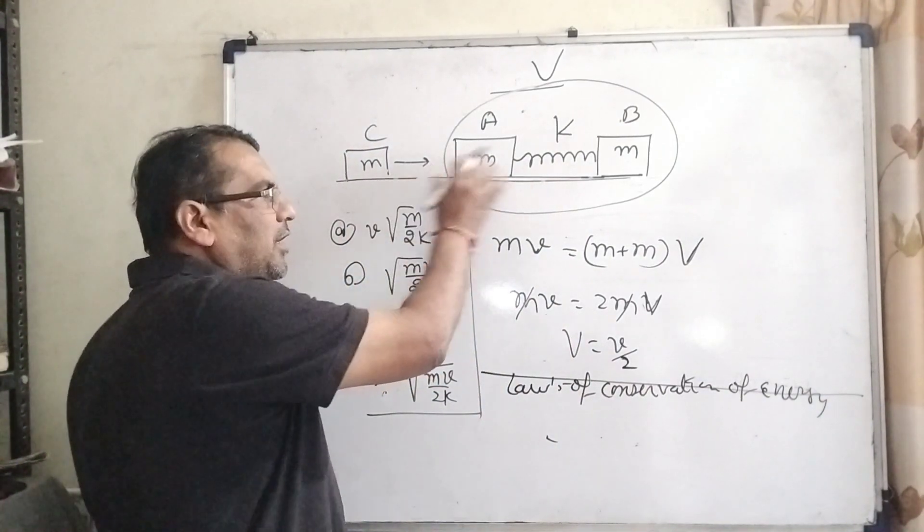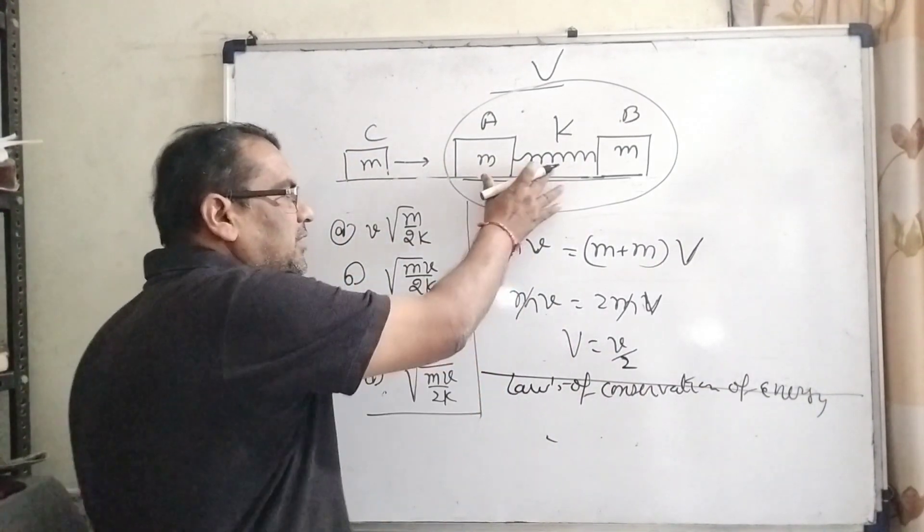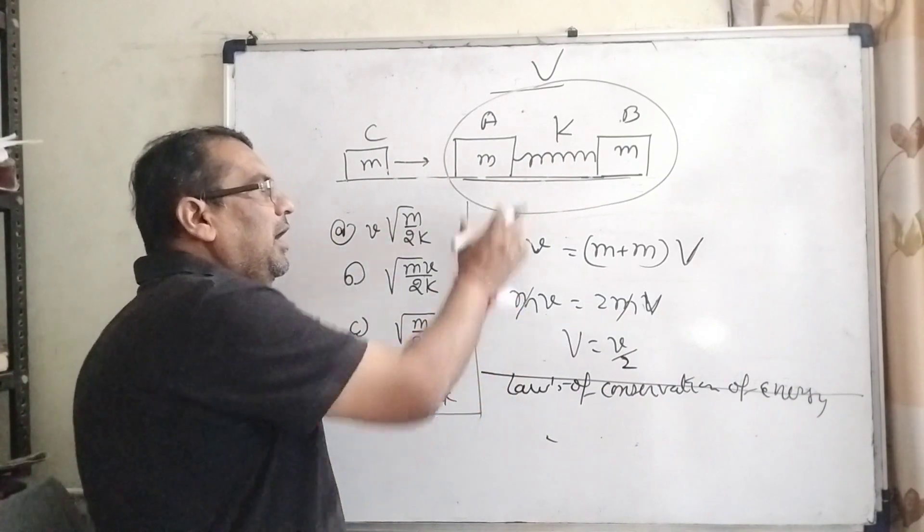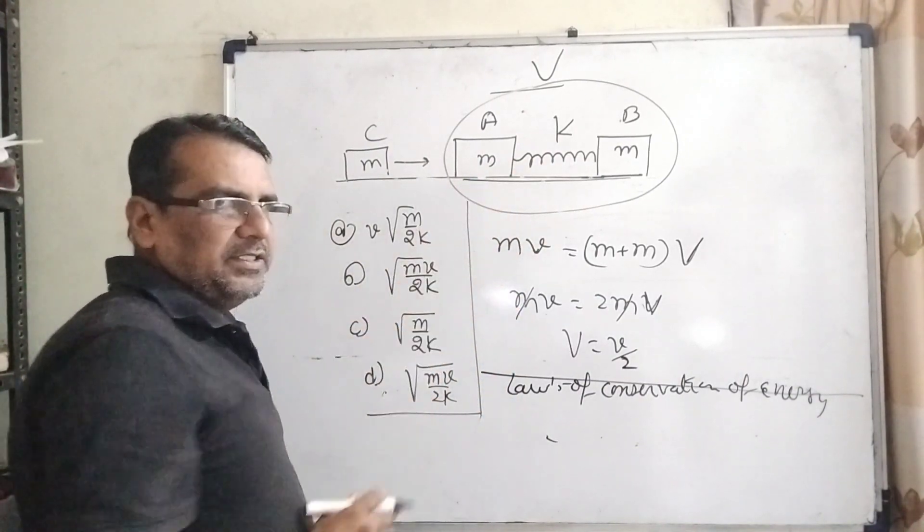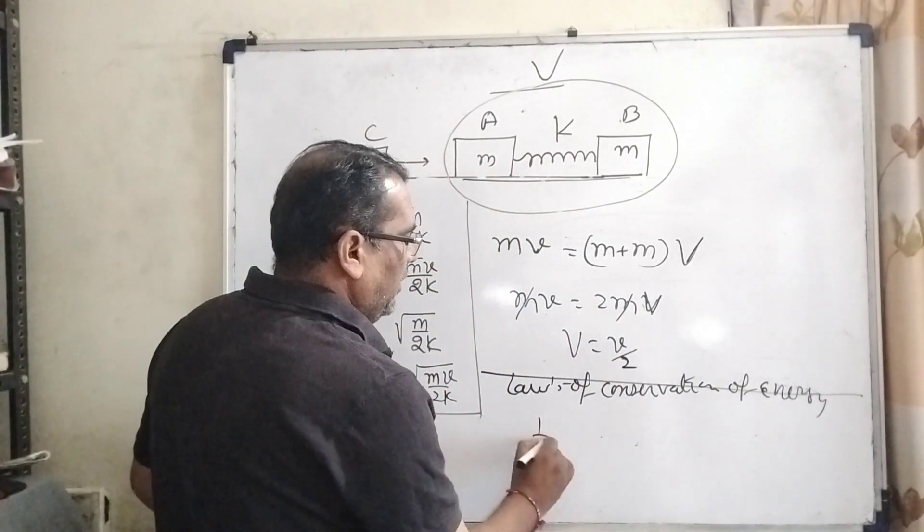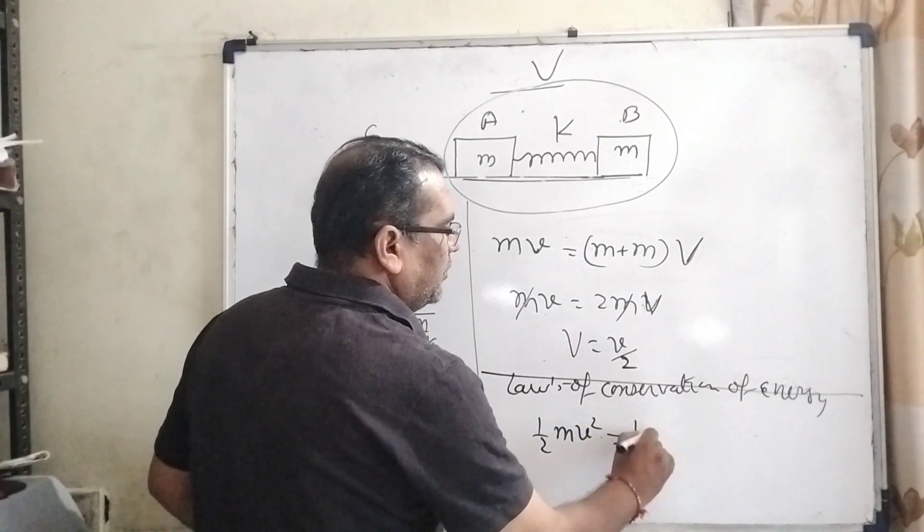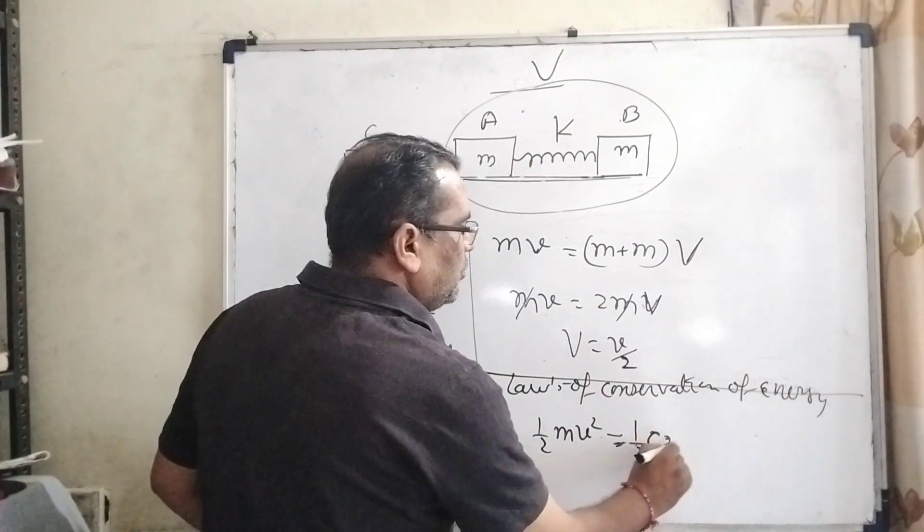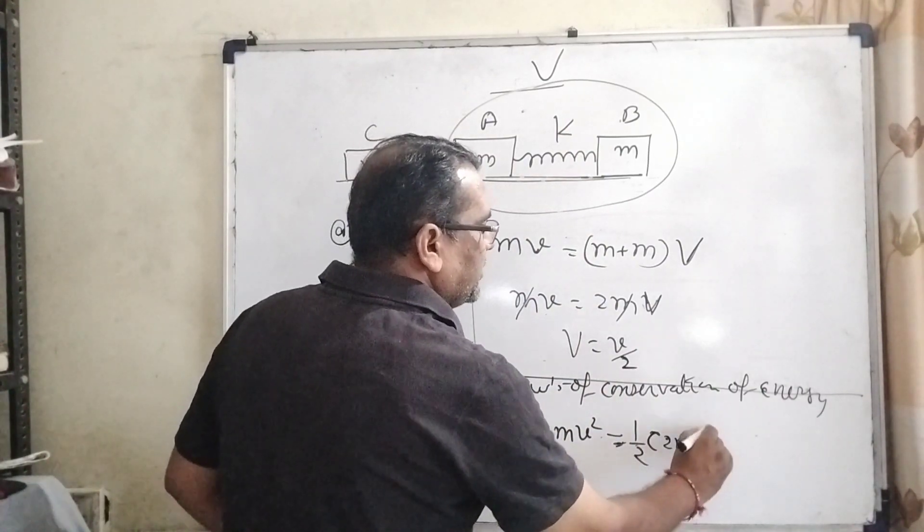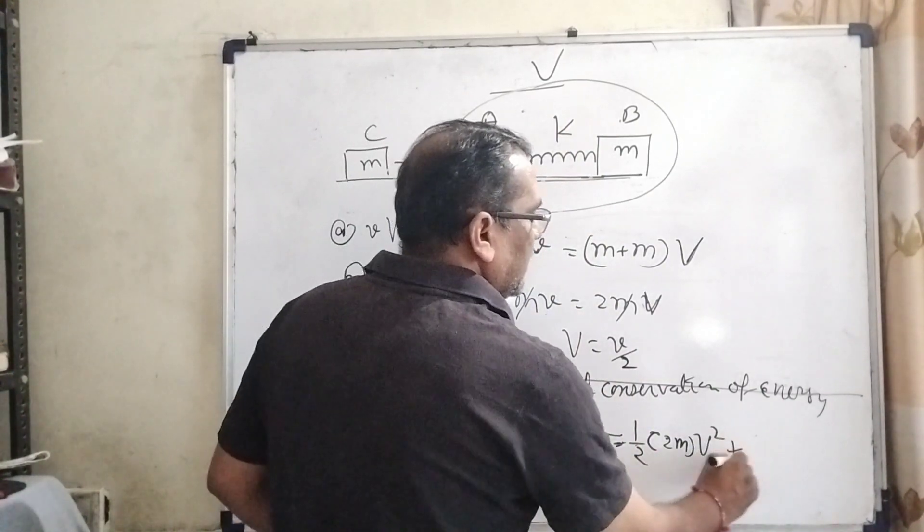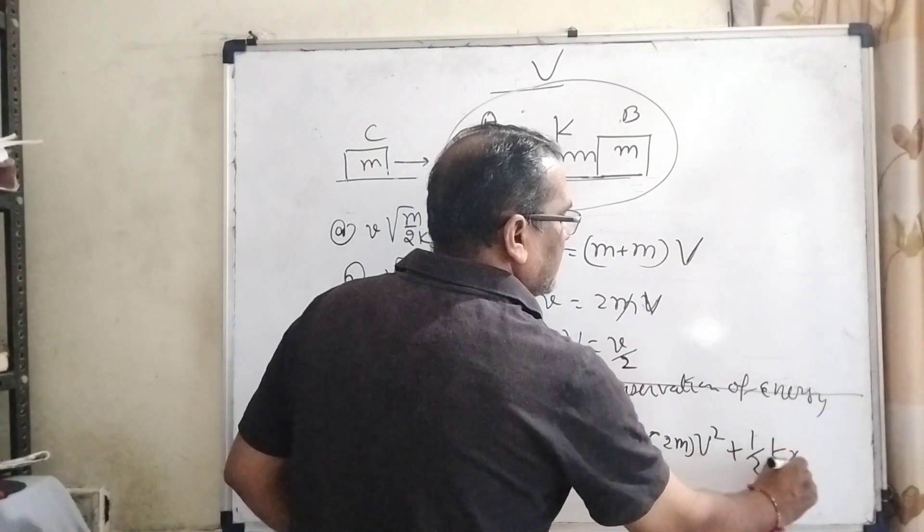Here the kinetic energy converts into two energies: kinetic energy of the system and spring energy. So ½mv² = ½(2m)V² + ½kx².